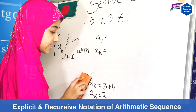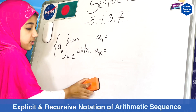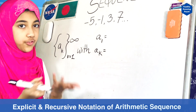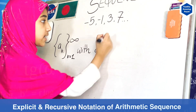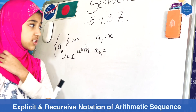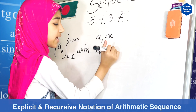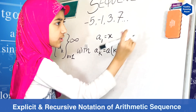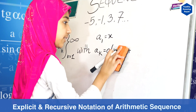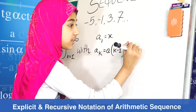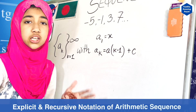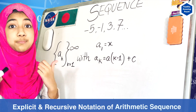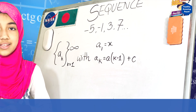So the basic structure for the recursive formula is: a sub 1 equals x, where x is your first term — just as we held it in the explicit formula. And: a sub k equals a sub (k minus one) plus c, where c is the common difference, again as we held it in the explicit formula. This is the basic structure you need to remember. In my next class I will show you how to figure out the explicit and recursive of the geometric sequence. Thank you.